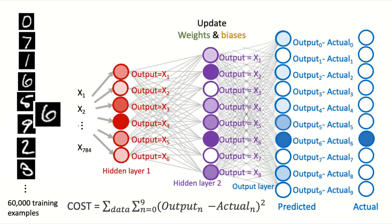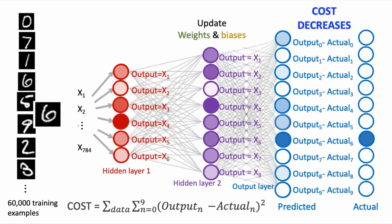The adjustments to the second layer weights and biases should be changing the output of the second hidden layer, such that when they are fed into the output layer neurons, the ultimate output from the network will be nudged closer to the answer that we want for all the data in our training set. The cost function should now decrease.